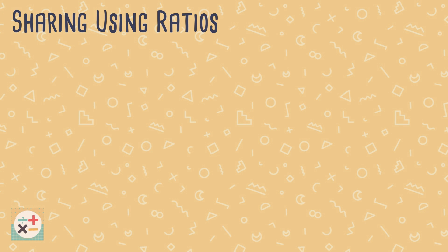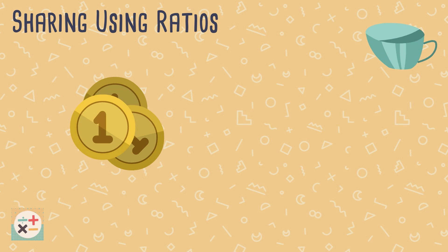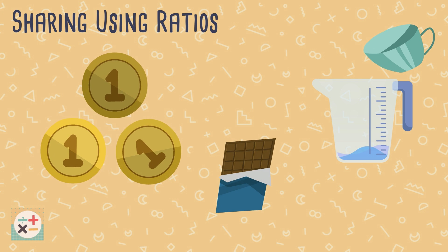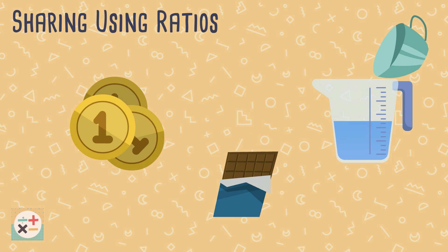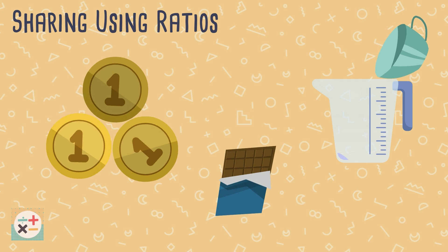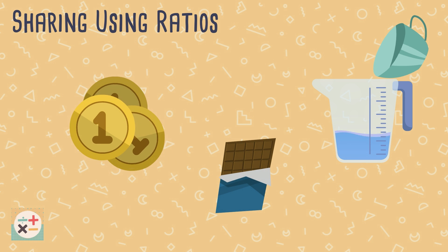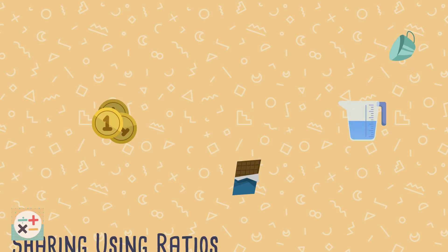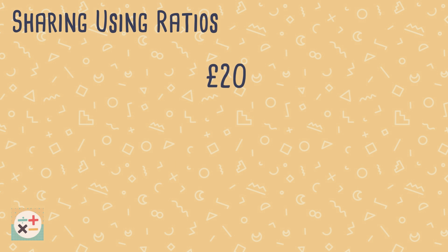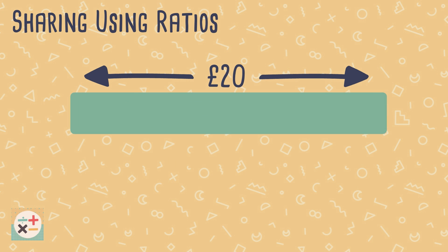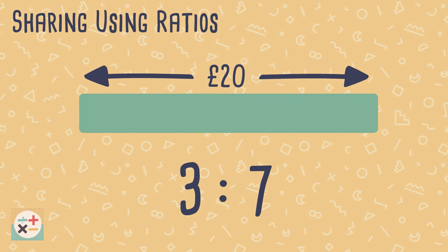Ratios can be used to share quantities, such as money or ingredients when cooking. To be able to share in a given ratio, we should think of the amount to share as a whole, and each of the numbers in the ratio is parts of that whole.